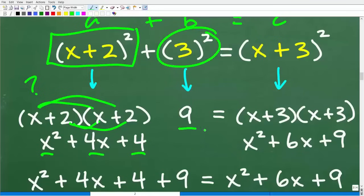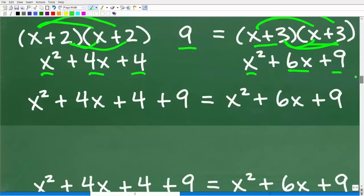So, x plus 2 squared is x squared plus 4X plus 4. 3 squared is going to be 9. Then x plus 3 squared is x plus 3 times x plus 3. X times X is x squared, X times 3 is 3X, and we have this other 3X, that's 6X. 3 times 3 is 9.